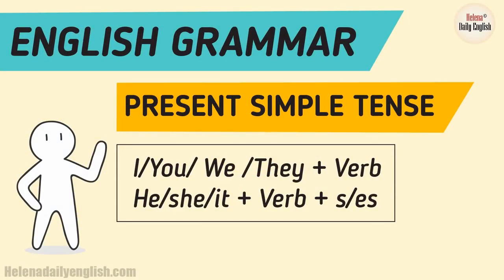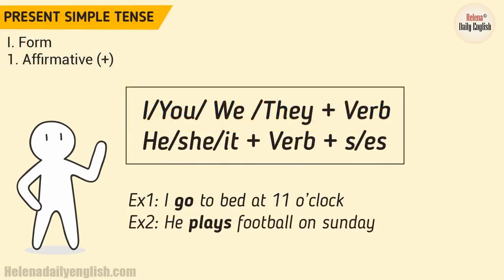Present Simple Tense — Form 1: Affirmative. I, you, we, they plus verb. He, she, it plus verb plus -s or -es. Example 1: I go to bed at 11 o'clock. Example 2: He plays football on Sunday.